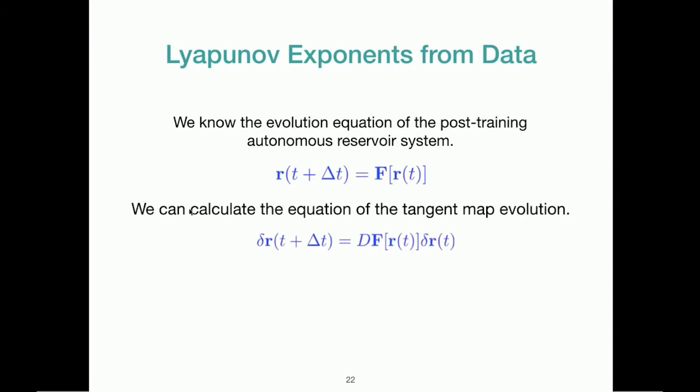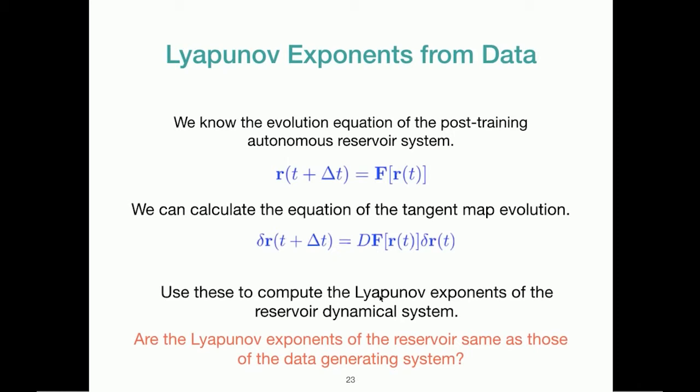From this, we can calculate whatever derivatives we need, and whatever we need to calculate the equation of the tangent map evolution. The tangent map tells us how a perturbation grows in time. And we can use these to compute the Lyapunov exponents of the reservoir dynamical system. And we can ask, are the Lyapunov exponents of the reservoir same as those of the data-generating system?